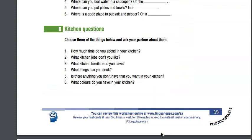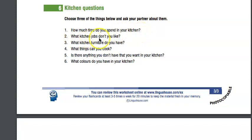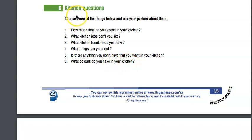Next, choose three of the things below and ask your partner about them. If you're not in class, ask someone at home. Questions include: how much time do you spend in the kitchen? What kitchen jobs don't you like? What kitchen furniture do you have? What things can you cook? Is there anything you don't have that you want in your kitchen? What colors do you have in your kitchen?